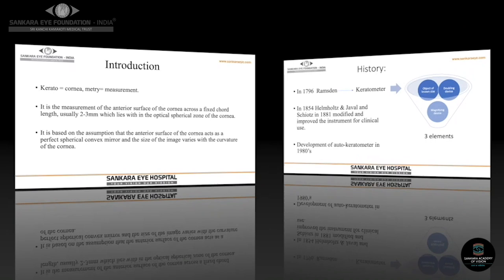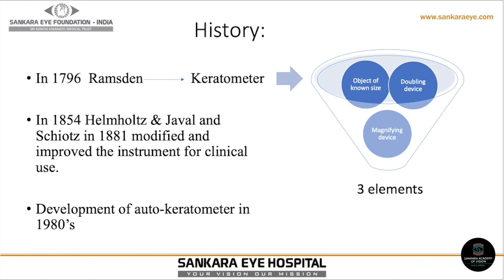In 1796, Ramsden was the first one to introduce the keratometer, followed by Helmholtz, Jawal, and Schiats, who modified the instrument for clinical use around 1881.